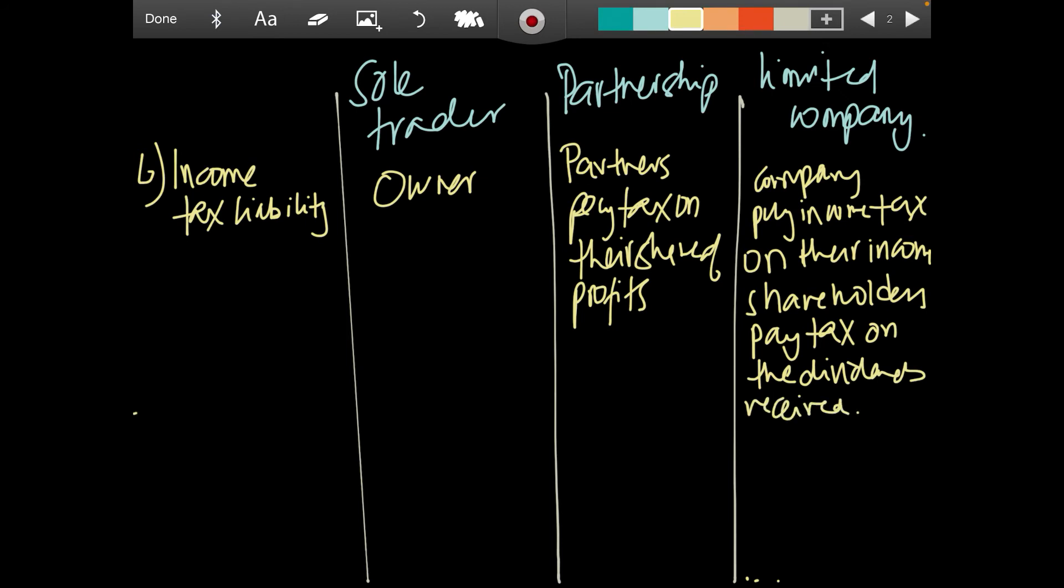The last point of difference in the ownership types is transfer of ownership. This basically means how difficult is it to transfer the ownership to another person, company, or partners. In a sole trader it is easy to transfer the ownership. In partnership it is comparatively easy to transfer and it transfers when all the partners agree.